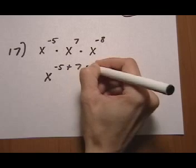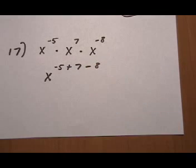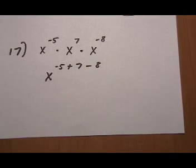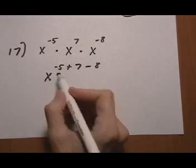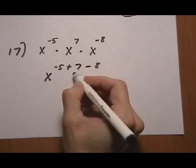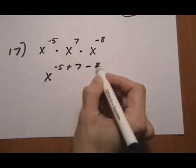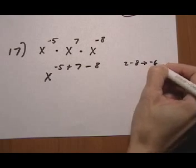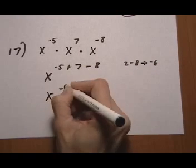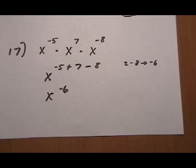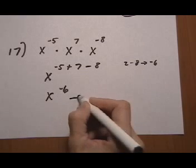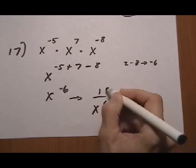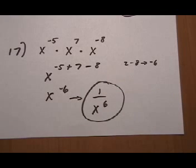Minus 5 plus 7 plus a minus 8 or subtract 8, either way. So that gives us minus 5 plus 7 is a 2. And then 2 minus 8 is minus 6. So x to the minus 6. And we can't have a negative exponent in our final answer. So we're going to go ahead and shift it down. 1 over x to the 6th power is the final answer there.